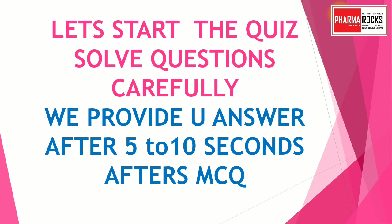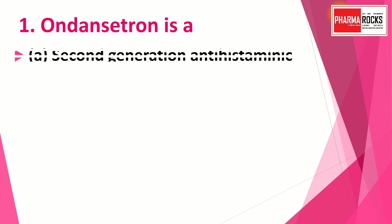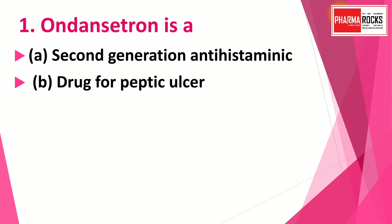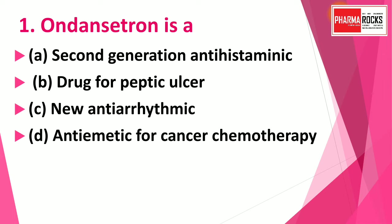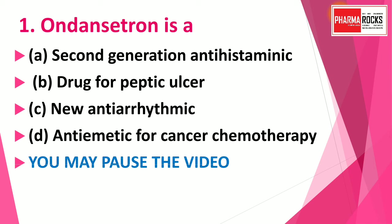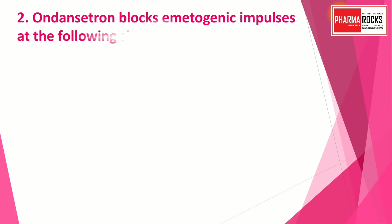Question number one: Ondansetron is — option A: second generation antihistaminic drug; option B: drug for peptic ulcer; option C: new anti-emetic drug; option D: anti-emetic for cancer chemotherapy. You may pause the video to think about the correct answer. The correct answer is option D — anti-emetic for cancer chemotherapy. Ondansetron is an anti-emetic drug for cancer chemotherapy.